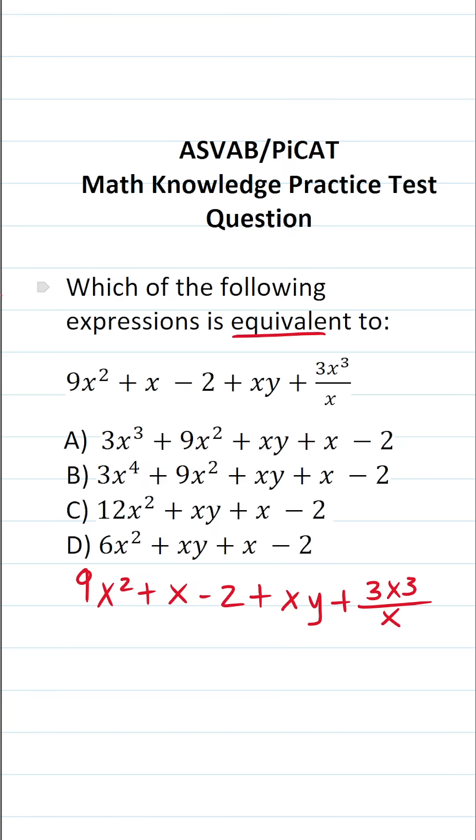Now, to find the equivalent expression, what we're going to do is simplify this expression. And looking at this final term in this expression, notably 3x to the third over x, I realize that there's something I can do to simplify that. So let me go ahead and simplify that off to the side.